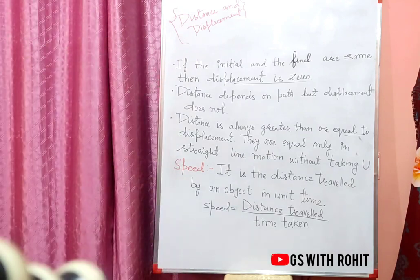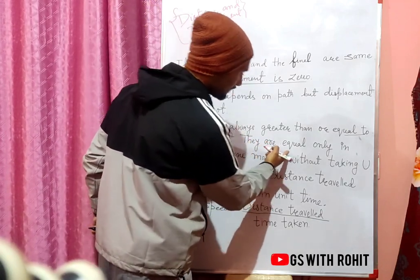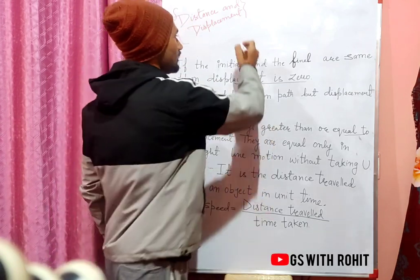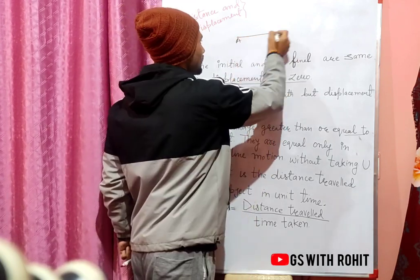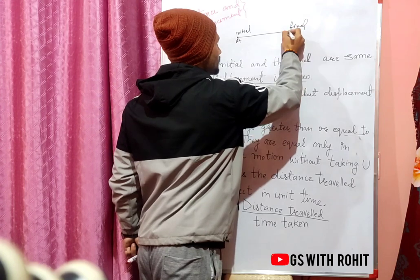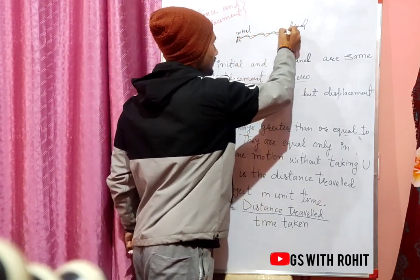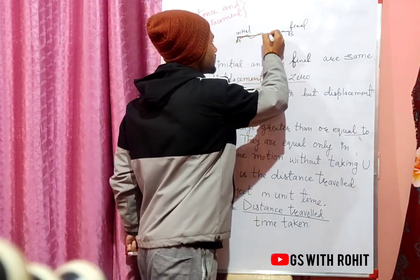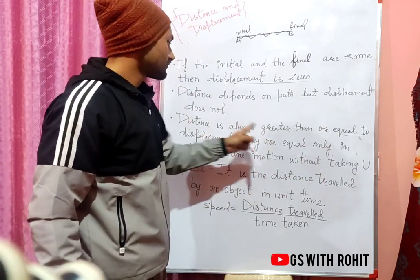For example, if a body is traveling a straight path from A to B, the distance is the actual path traveled and the displacement is the shortest distance. Because the path is straight, distance and displacement are equal in this case.